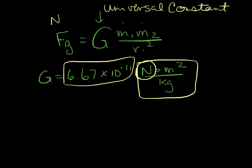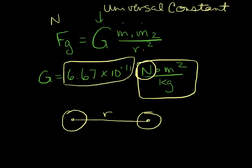The two M's are the masses of the two objects. Any two objects with mass are attracted to each other gravitationally. R is the distance between them — the center-to-center distance between the two objects, like from the center of the Earth to the center of the Sun.